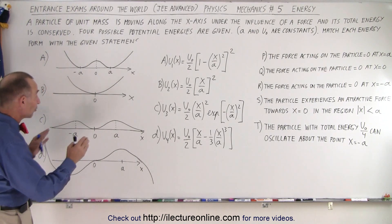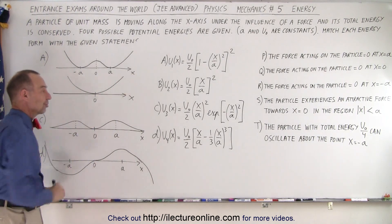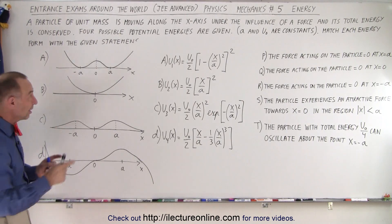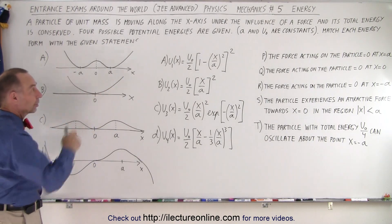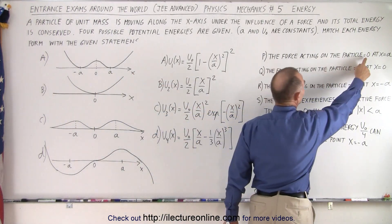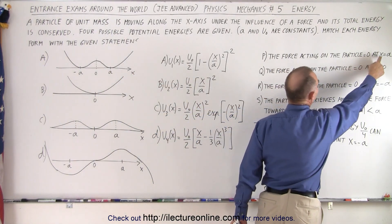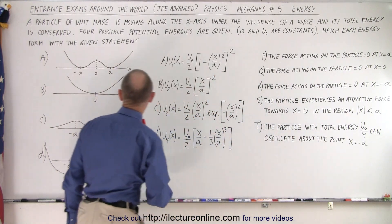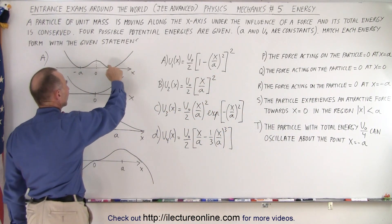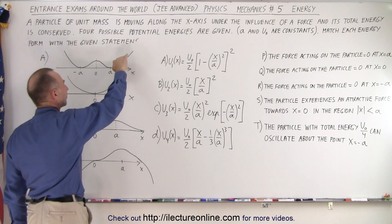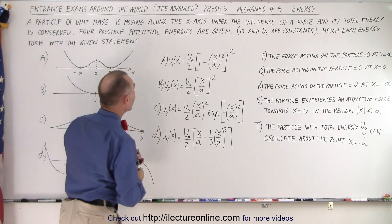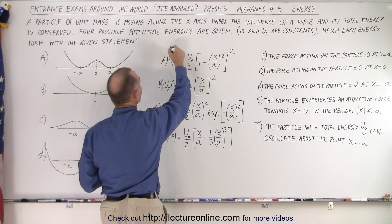The first thing to do is make sure you have graphs that match your equations. Now we can read each statement and see which graphs belong to which statement. Statement P says the force on the particle equals zero at x equals a. For equation A, the force acts in opposite directions on either side of that point, so it must be zero there. So for A, we get P.